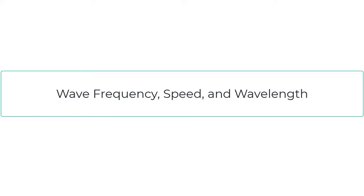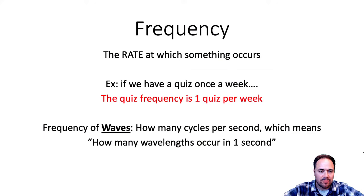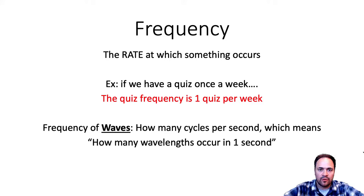Today we're going to talk about wave frequency, speed, and wavelength. Let's start with frequency. Frequency is the rate at which something occurs. If we had a quiz every week, we could say our quiz frequency is one quiz per week. When talking about waves, we talk about cycles per second or waves per second.